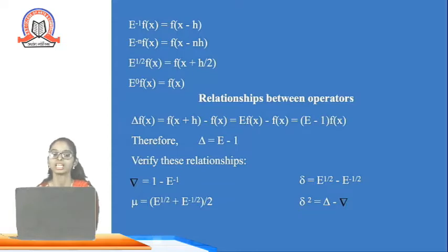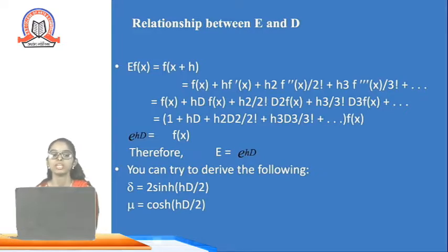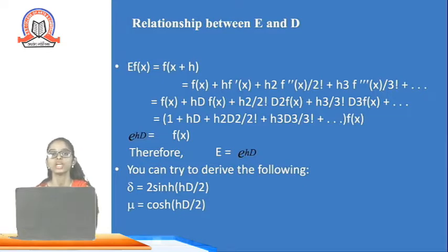Similarly, the backward difference operator nabla equals 1 − E⁻¹. The relationship between the shift operator and the derivative operator gives E f(x) = e^(hD) f(x), that is E = e^(hD).